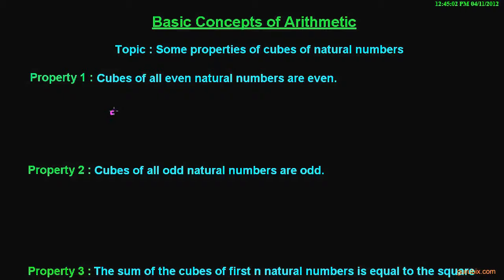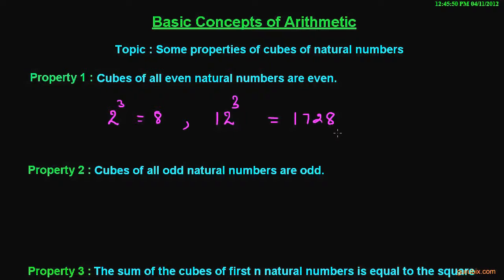Suppose we have an even natural number 2 and if we find the cube of 2, it will be 8, and we know that 8 is also an even number, so the property is true. Let us take another example: suppose we have an even number 12 and if we calculate the cube of 12, then it will be 1728, and we observe that 1728 is also an even number.